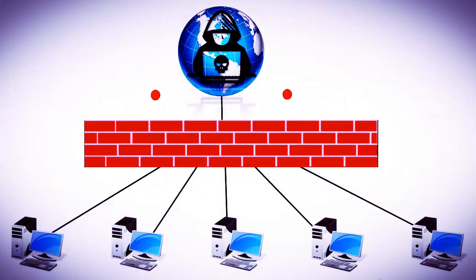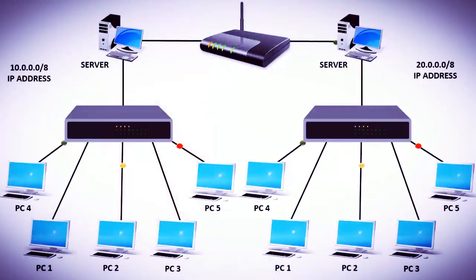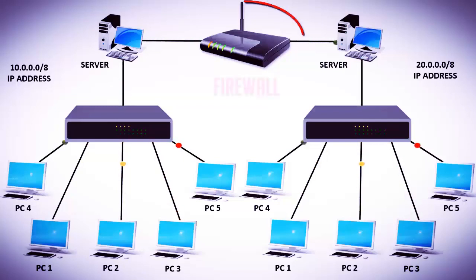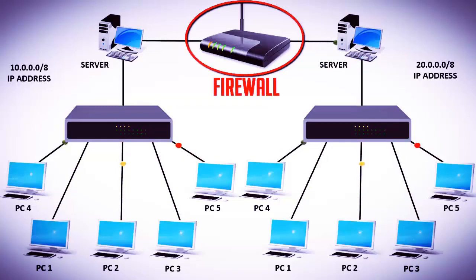As we know, firewall is a secured wall between your internal and the external network — that is between your private network and the public network. Basically, firewall can be configured in such a way that the public network cannot access the private network and the private network cannot access certain resources of the public network. Firewall is basically placed at the gateway from where packets are coming into the network and from where packets are going out from the network.